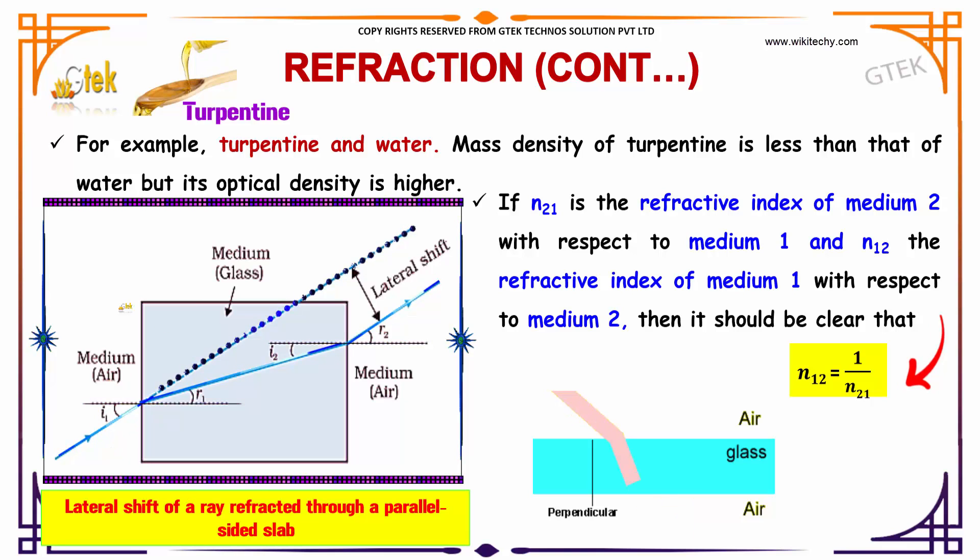I'm trying to show you a picture of a lateral shift of a ray refracted through a parallel-sided slab. You can see the ray is incident here and it is refracted here, and it is incident here and refracted here. From the normal one, it is getting a shift referred to as lateral shift due to parallel-sided slabs.